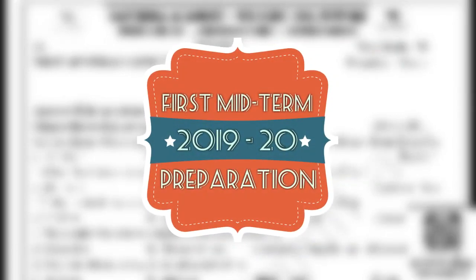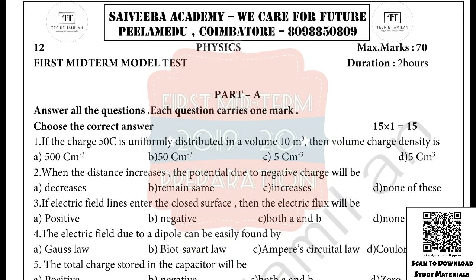I have a mid-term test at the end of the week. This is the physics model question paper. This is not a mid-term, but it is useful for you to have 45 marks. But this is 70 marks, so this is a model question paper. This is the physics model question paper.